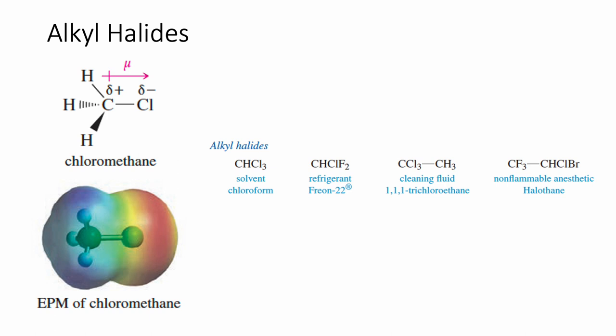Alkyl halides are derived from alkanes. Notice we have chloromethane here — if the chlorine was replaced by an H, we would just call that methane. Alkyl halides are different than alkanes because that halogen is generally an electronegative group that pulls electron density away from the carbon. Alkanes with just carbon and hydrogen are nonpolar, because carbon and hydrogen have very similar electronegativity, so they share electrons evenly. We don't have any dipole moments or partial charges when we look at alkanes.